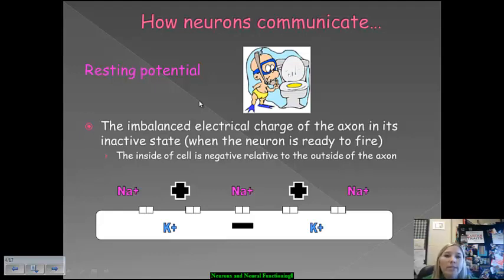The first thing that you need to keep in mind when you're understanding the communication of neurons is the resting potential. When a neuron is in an imbalanced state within the axon, that means that it's inactive. It will not be firing yet. However, it is ready to fire.